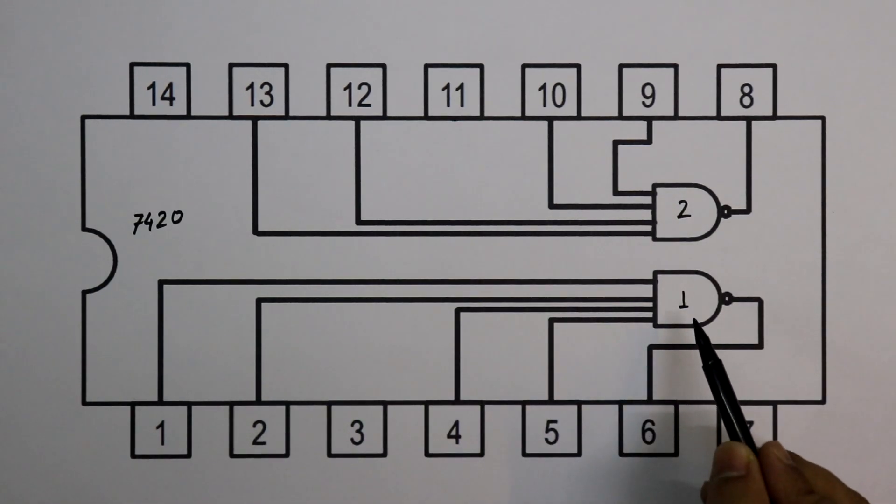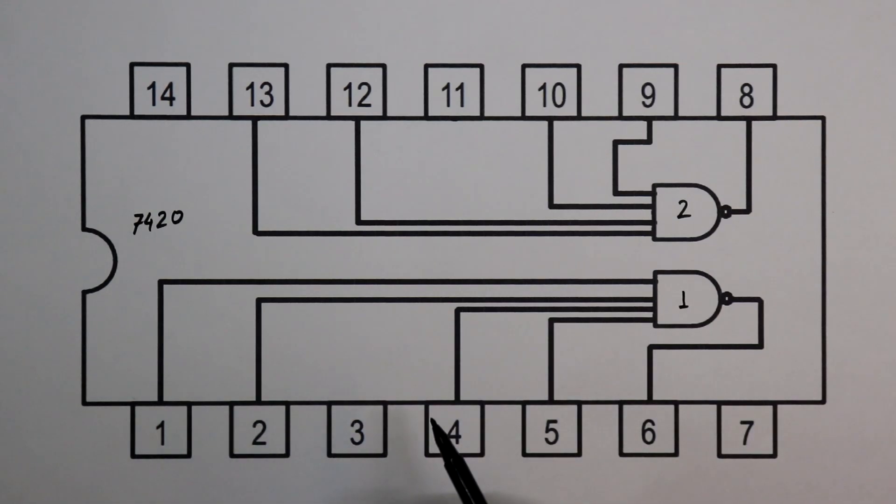As you can see here, for the gate 1, pin number 1, 2, 4, 5 are the inputs and 6 is the output.